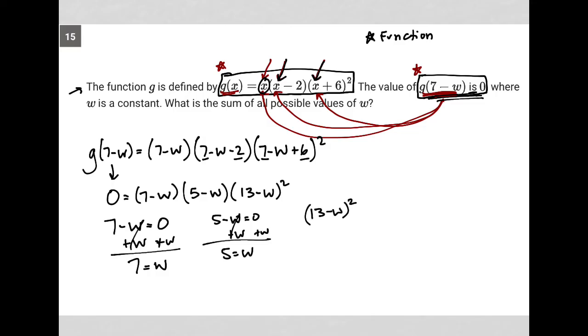I set that equal to 0. I could square root both sides, leaving me with 13 minus w equals 0. Then I add w to both sides and end up with 13 equals w.